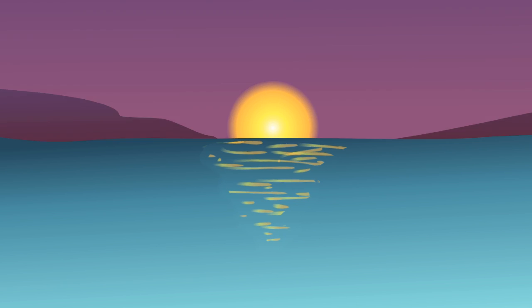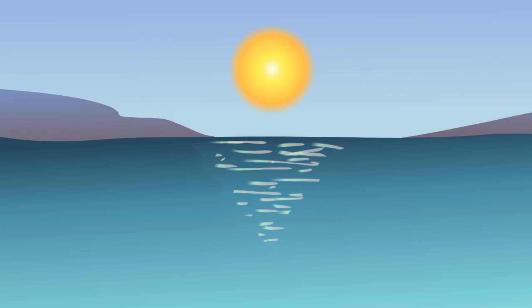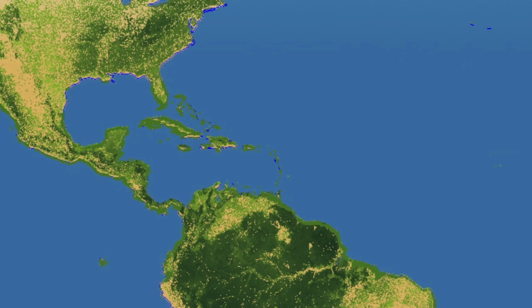On the edge between land and sea, balance means everything. Nothing represents this better than mangroves, the wetland forests that rule Earth's tropical shores.